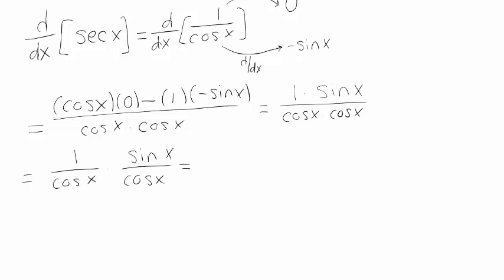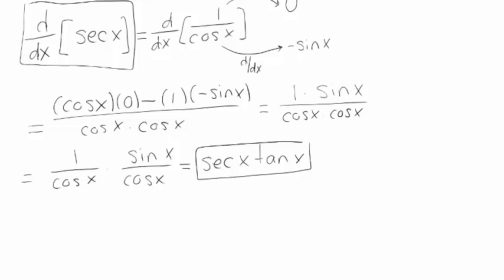1 over cosine x, well that's just our secant x, come back again. And sine x over cosine x, that's tangent of x. So this is how we show that the derivative of secant of x is tangent of x.